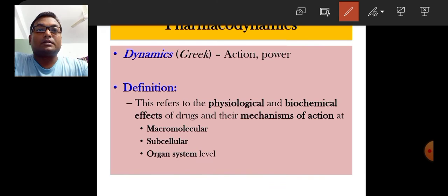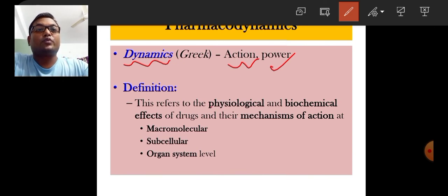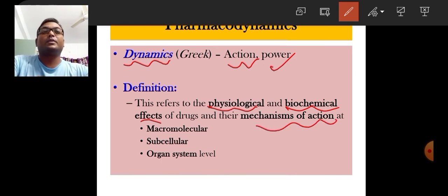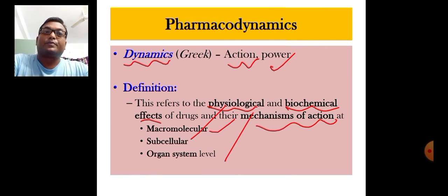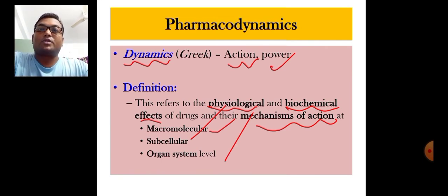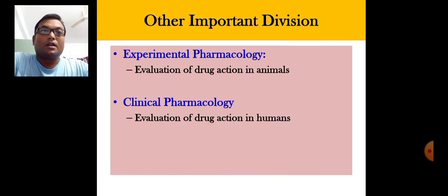Pharmacodynamics — as the name suggests, 'dynamics' means action or power — refers to the physiological and biological effects of drugs and their mechanism of action in the body. What the drug is doing in the body at the molecular level, subcellular level, and organ system level is called pharmacodynamics.